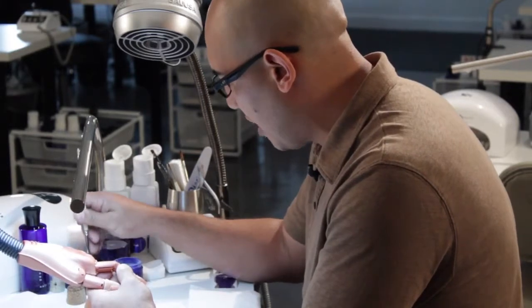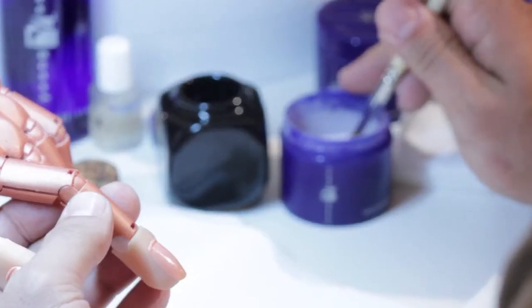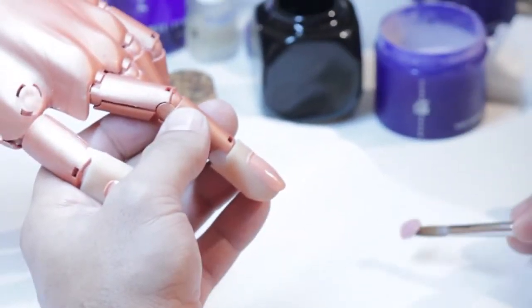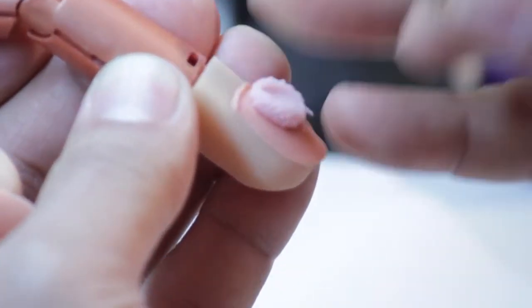I'm going to make sure that we load up my brush and get a nice healthy pearl. If there's too much monomer, I'm going to lightly tap it off. I'm going to set it right to the cuticle area.